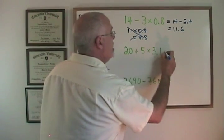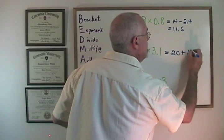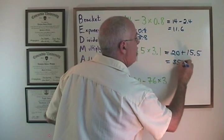We have 20 plus 5 times 3.1, which is 15.5, and our answer is 35.5.